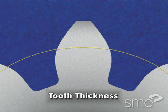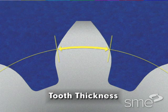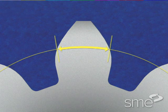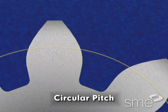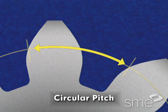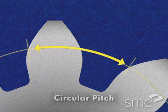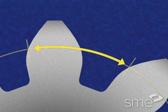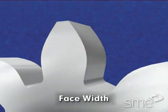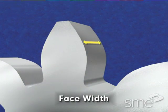Tooth thickness is the thickness of one gear tooth measured along the pitch circle. Circular pitch is the length of the arc along the pitch circle between corresponding points of adjacent gear teeth. Face width is the gear tooth width measured along the axial plane.